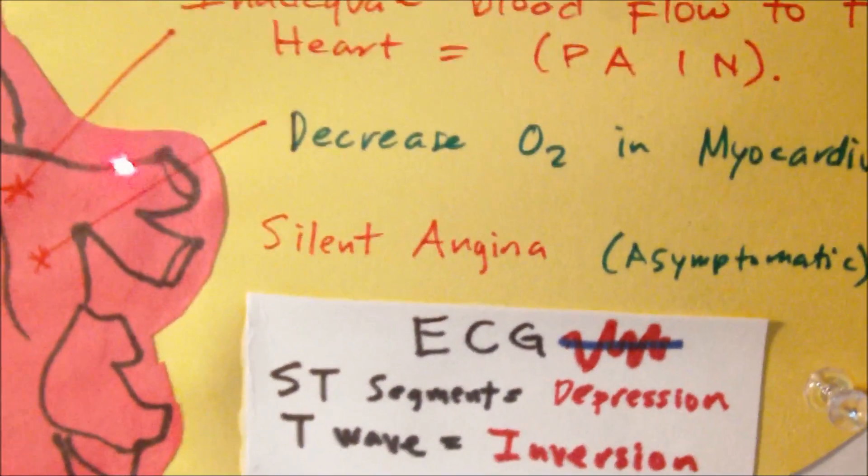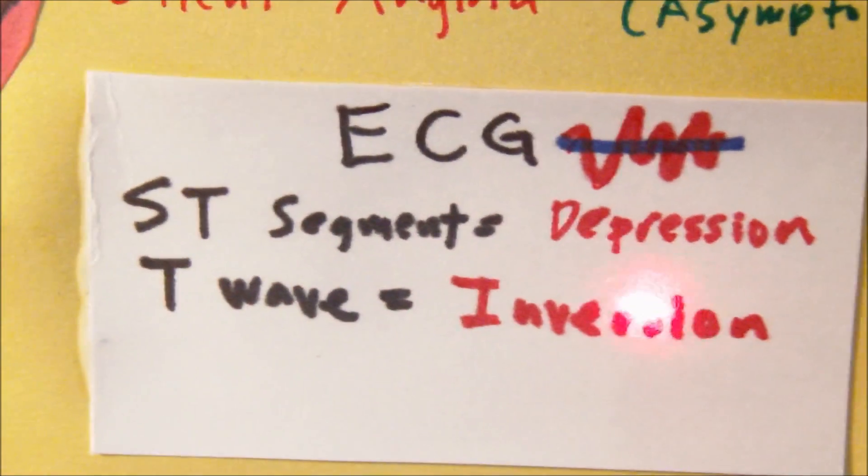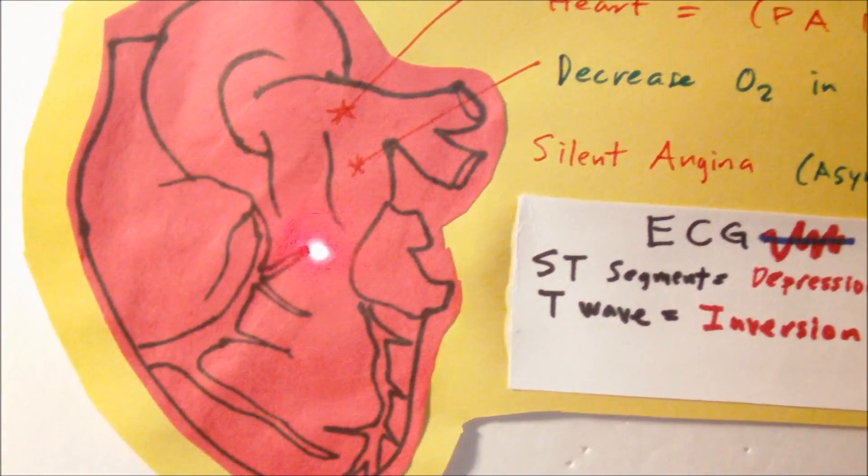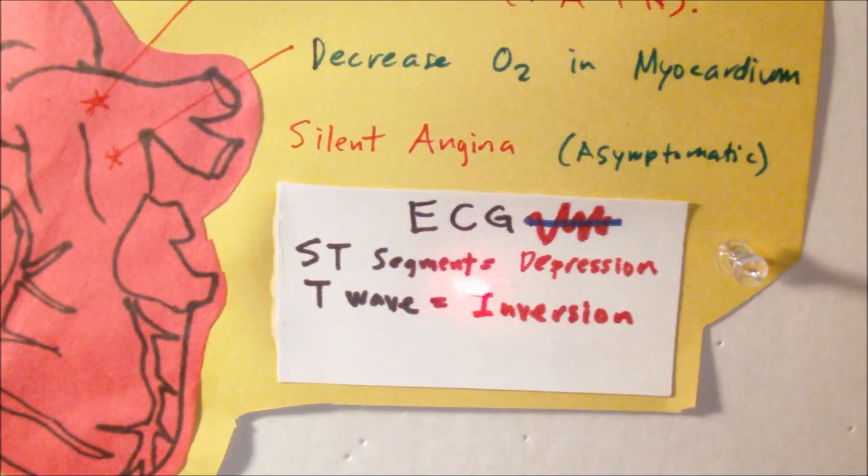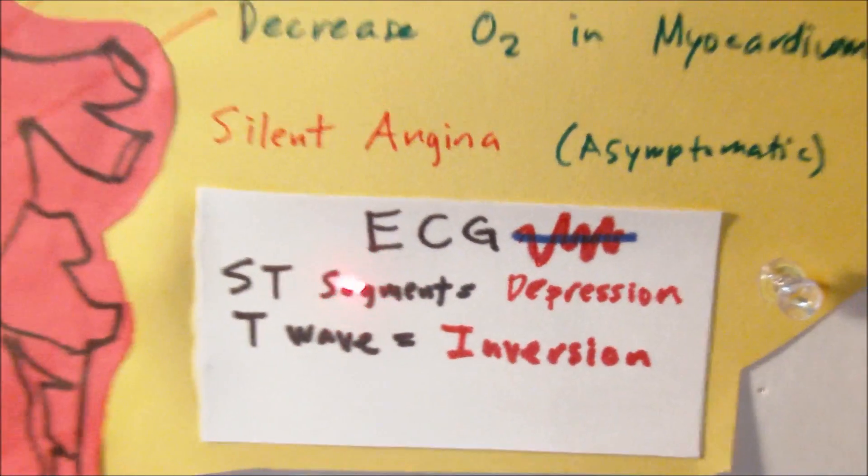Now you have to keep in mind that the EKG for angina will show an ST segment depression and T wave inversion. The ST segment and T wave discrepancy represents an abnormality in the ventricular repolarization. This goes back to the fact that during angina there is ischemia and a decrease of oxygen being given to the heart.